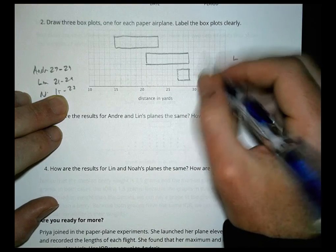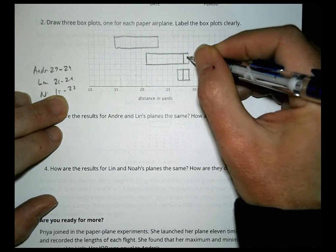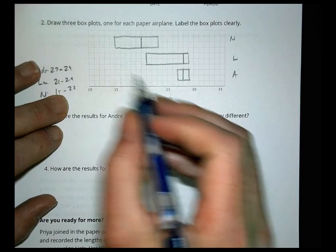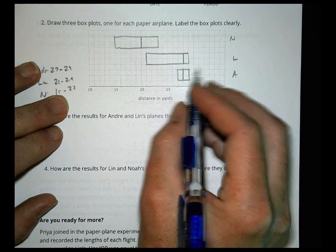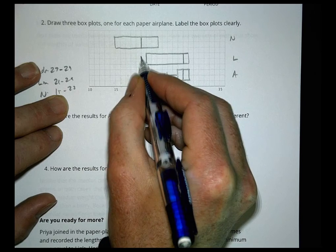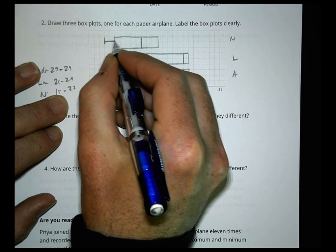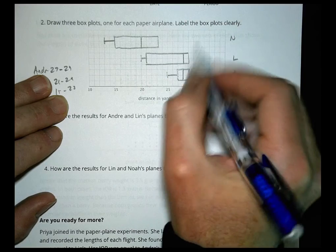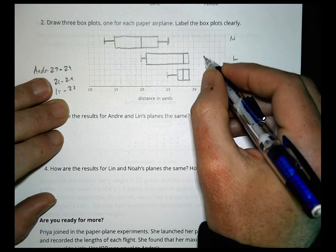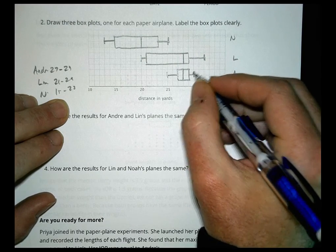The median for Andre was 28, so that's going to go here. The median for Lynn was also 28, so it's also going to go there. The median for Noah was 20, so we'll put his right there. Now let's add our minimums. Our minimums for Andre was 25, so it's going to be here. Our minimums for Lynn was 20, that's there. And the minimum for Noah was 13. The maximum for Noah was 25. The maximum for Lynn was 32. And the maximum for Andre was 30. So that's about what we have there.